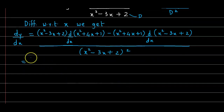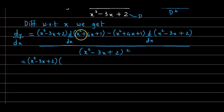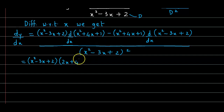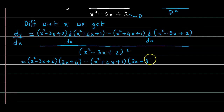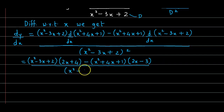The first bracket (x² − 3x + 2) stays as is. The derivative of (x² + 4x + 1): derivative of x² is 2x, derivative of 4x is 4, and derivative of 1 is 0. Minus (x² + 4x + 1) into the derivative of (x² − 3x + 2): derivative of x² is 2x, derivative of −3x is −3, and derivative of 2 (a constant) is 0. Bracket closes.